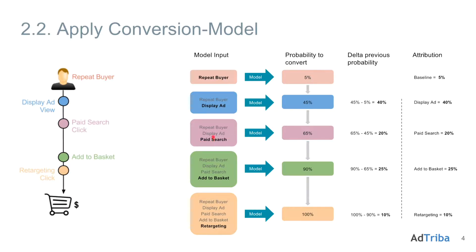The second click is paid search. We enter all information available up to this step — the repeat buyer info, the display ad view, and the paid search click — into the model and calculate a new conversion probability of 65%, which is 20 percentage points higher than the previous. So these 20 percentage points will be attributed to paid search. Then the next user journey event, add to basket, is added to all previous steps and entered into our model. The new conversion probability is 90%, which is 25 percentage points higher than the previous 65%, so 25 percentage points will be attributed to the add to basket event.